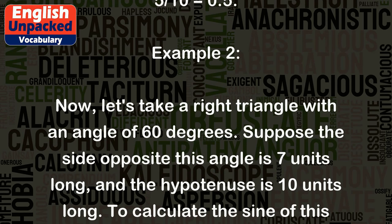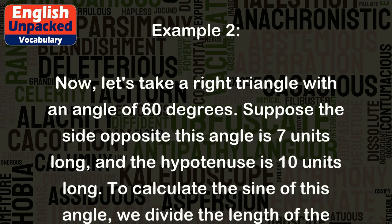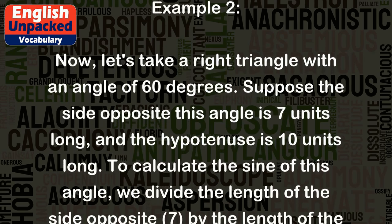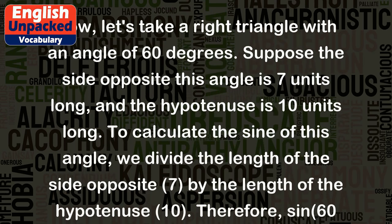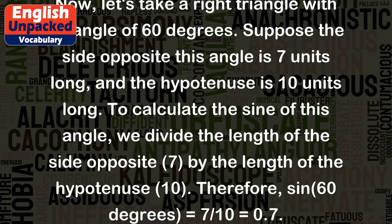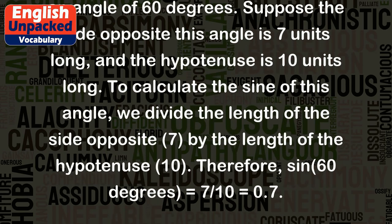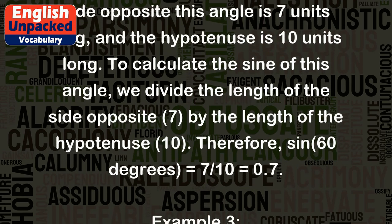To calculate the sine of this angle, we divide the length of the side opposite (7) by the length of the hypotenuse (10). Therefore, sin(60 degrees) = 7/10 = 0.7.